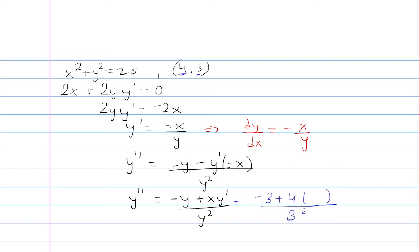So this is y prime, it's negative x over y. x is 4, y is 3, so that's negative 4 thirds.